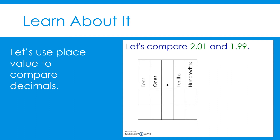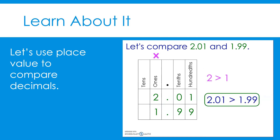Let's compare two decimals that do not have a zero in the ones place: two and one hundredths, and one and ninety-nine hundredths. We begin with the ones place — the ones values are not equal. Two is greater than one. Therefore, two and one hundredths is greater than one and ninety-nine hundredths. You might have predicted that one and ninety-nine hundredths was greater because of its ninety-nine hundredths, but the ones place is greater than any decimal place value. We must always start with the greatest place value when comparing.